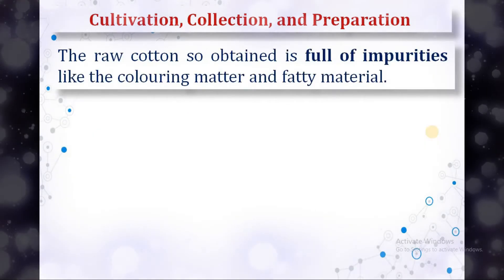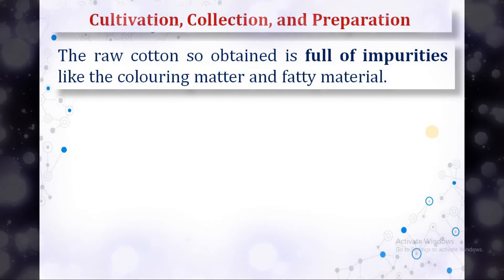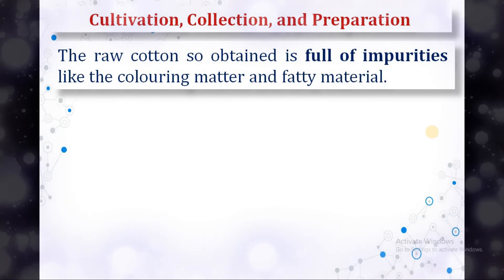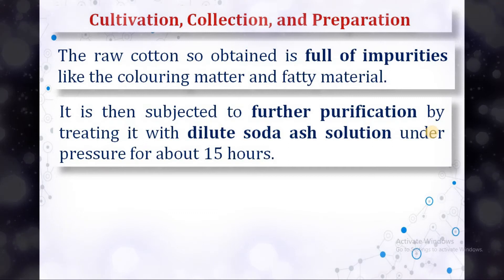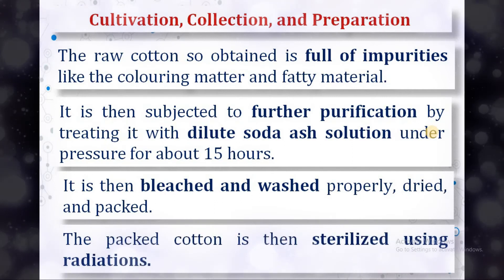The raw cotton obtained is full of impurities like coloring matter and fatty material. To purify it, the cotton is subjected to a further purification process by treating it with dilute soda ash solution under pressure for about 15 hours. It is then bleached, washed properly, dried, and packed. The packed cotton is then sterilized using radiation.